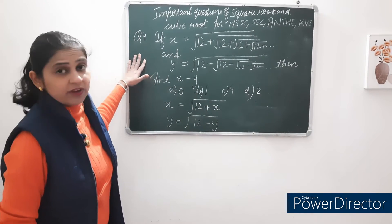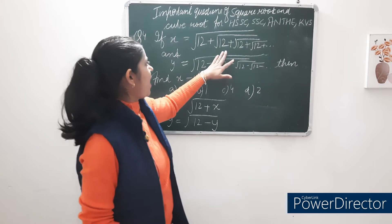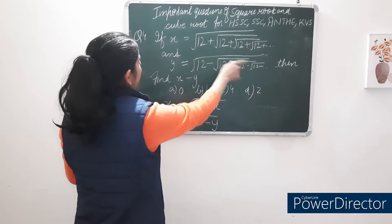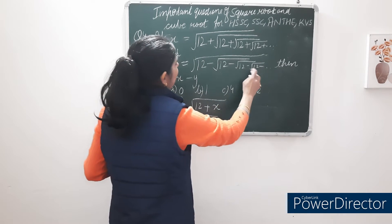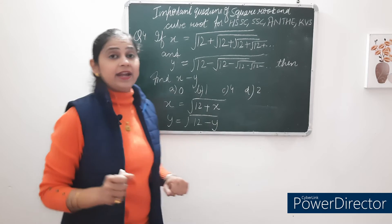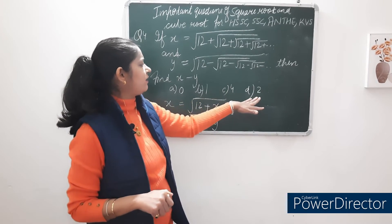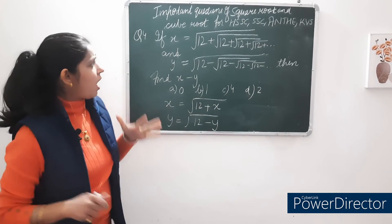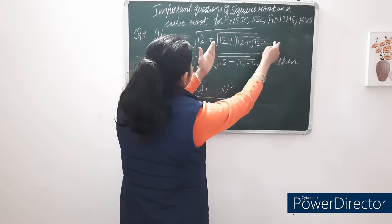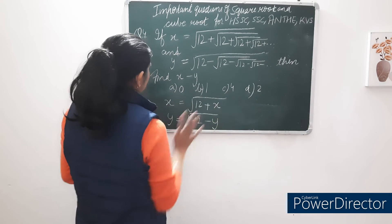Yes, next question — also very important. If x = √(12 + √(12 + √(12 + √12...))) up to infinity, and y = √(12 − √(12 − √(12 − √12...))) up to infinity, then you have to find x − y. We assume the inner repeating part is also x, so x = √(12 + x).